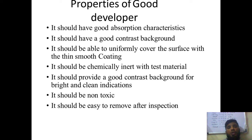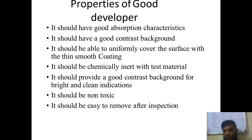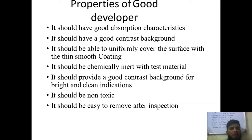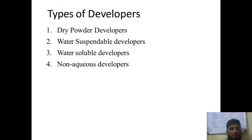Properties of a good developer: it should have good absorption capacity to absorb the penetrant; it should provide a good contrast background — like white against red — so the contrast is clear; it should uniformly cover the surface with a thin smooth coating; it should be chemically inert with the test material; it should provide good contrast for bright and clean indication; and it should be non-toxic and easy to remove after inspection.